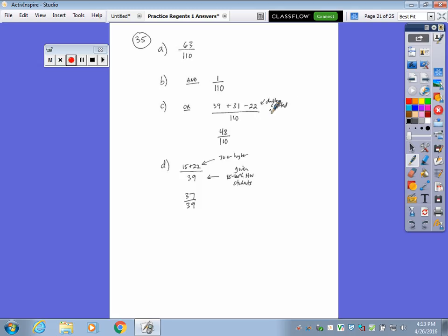Sorry, this right here says double counted those 22 people, so you have to subtract them off. And then D says, what is the probability you pick someone who has an average of 70 or higher? So that's the second two columns, 15 and 22 people, given that the student does 85 to 100% of their homework. So you're only taking people out of the 39 who do that much homework.